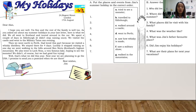We all went to Scotland and toured around in the car. We spent a couple of days in Edinburgh — it didn't stop raining once. We visited the castle and went to the Military Tattoo one evening. Then we went north to Perth. Dad loved this part because we visited a whiskey distillery. We stayed there for four days.